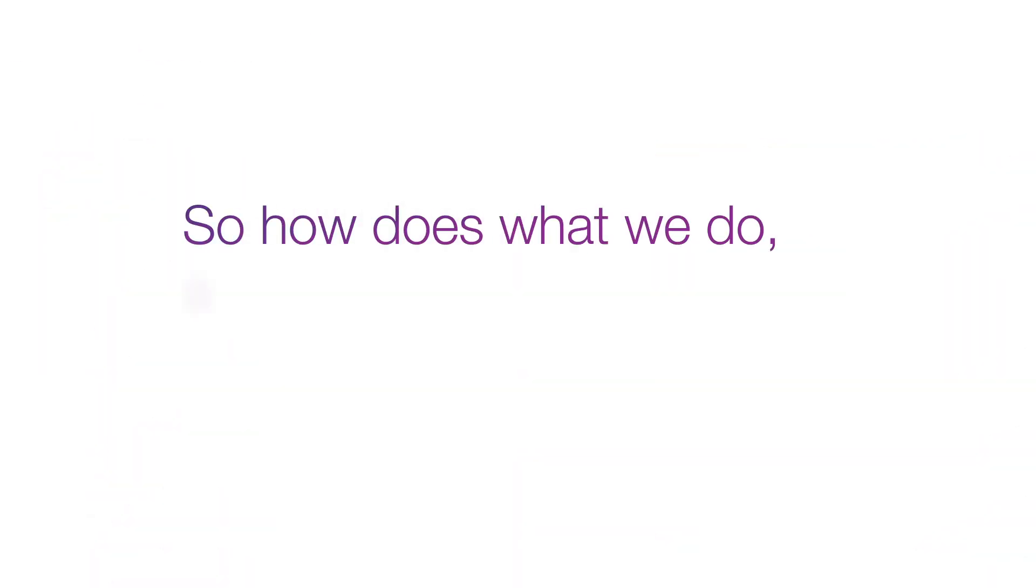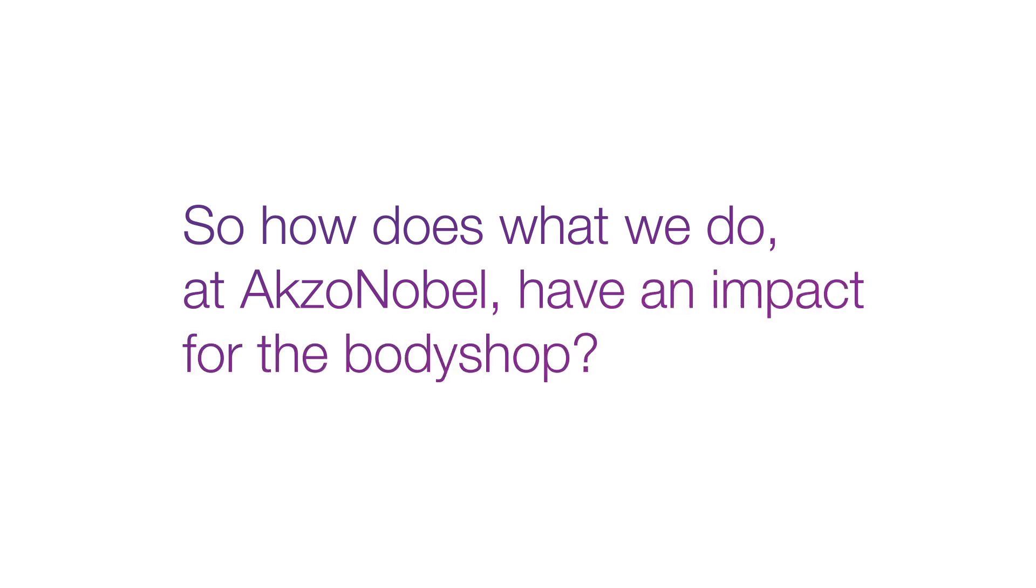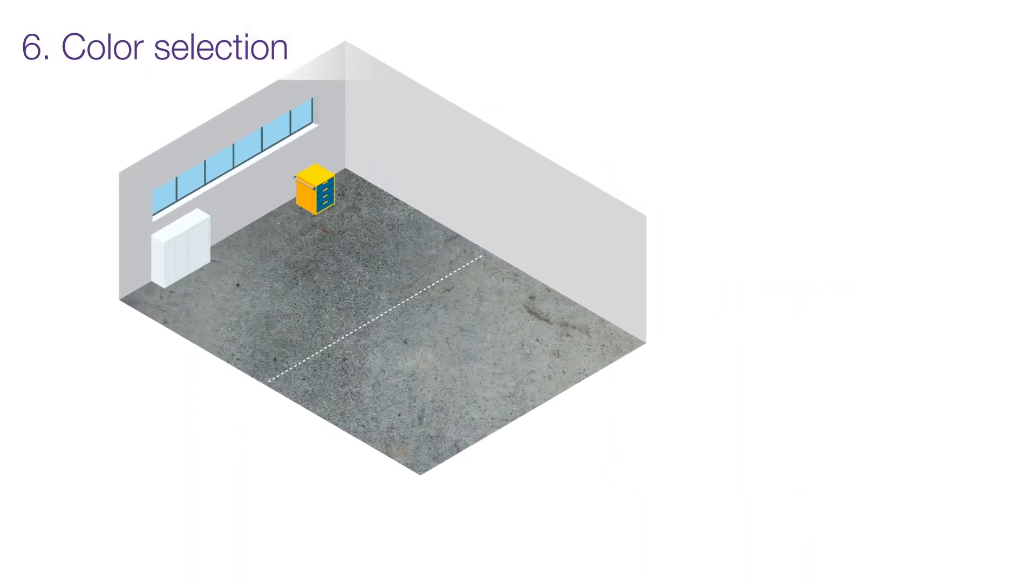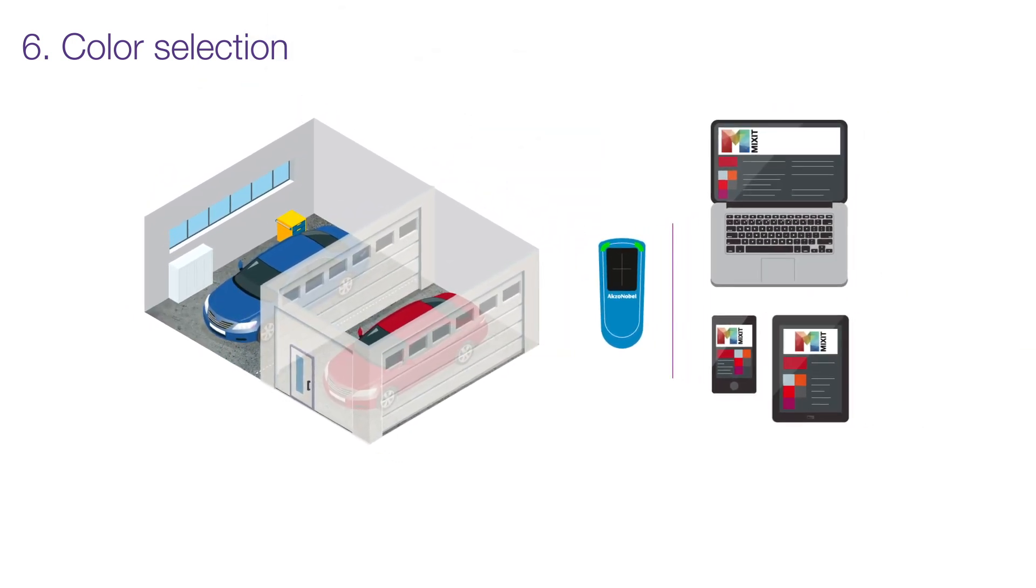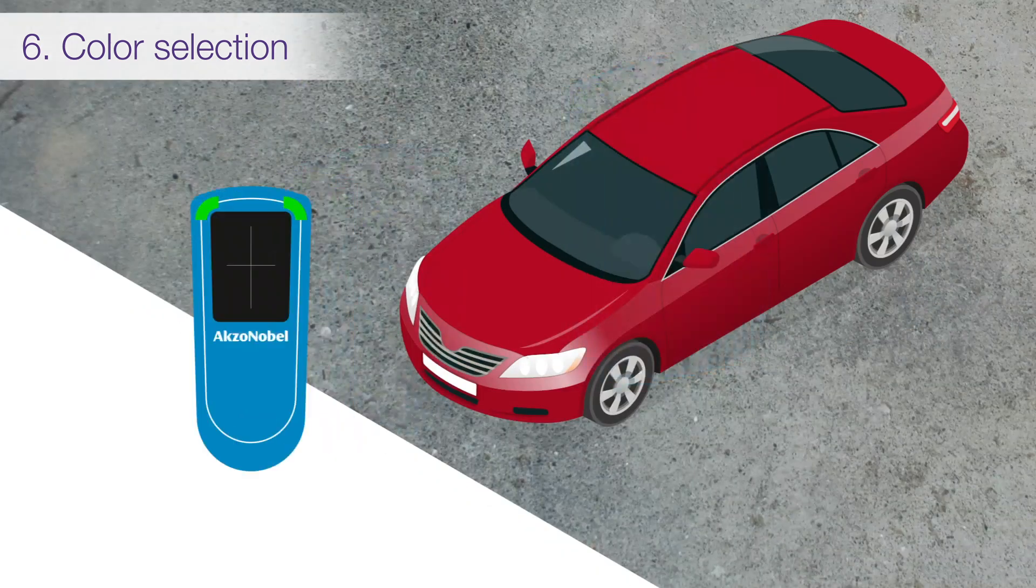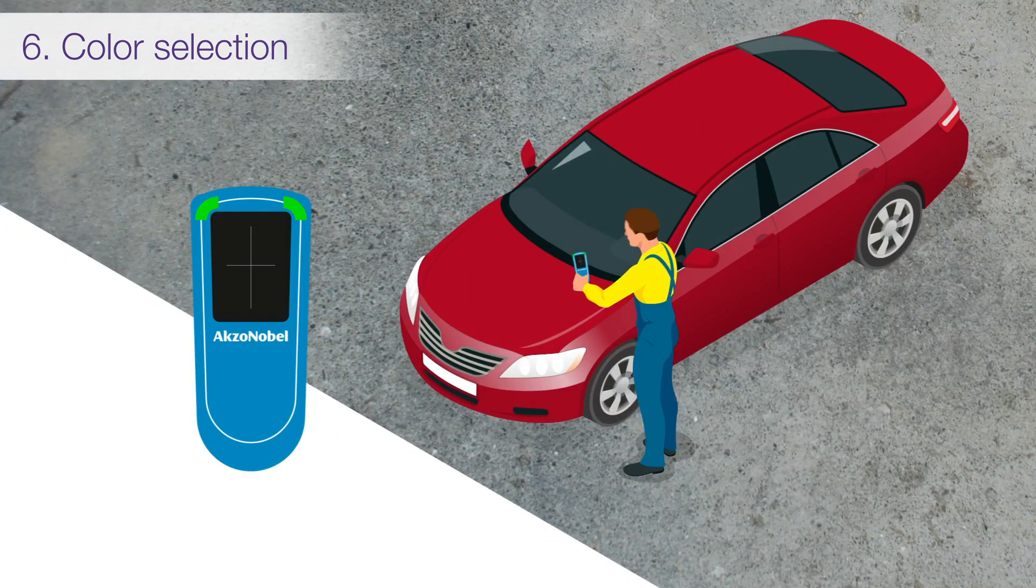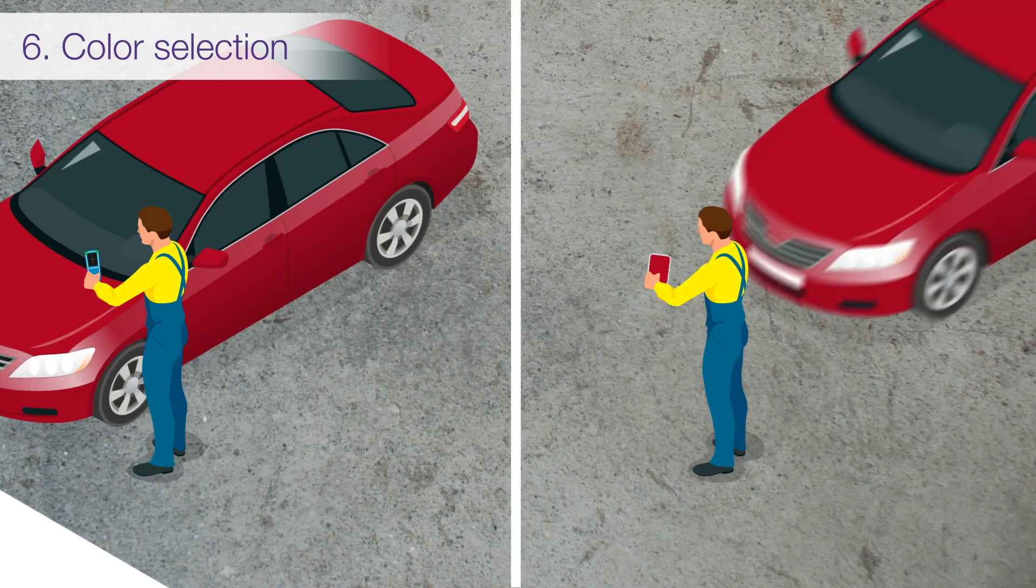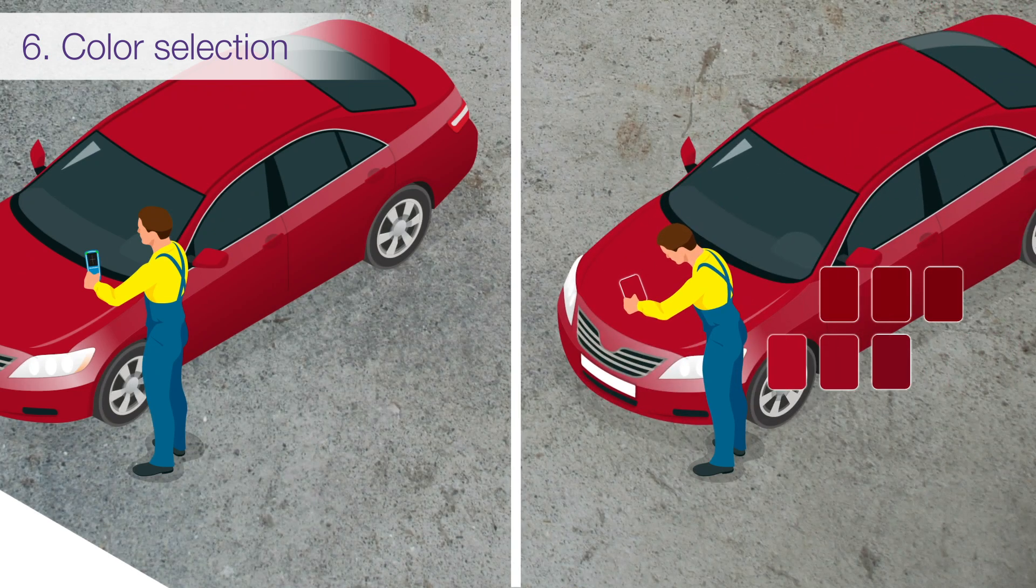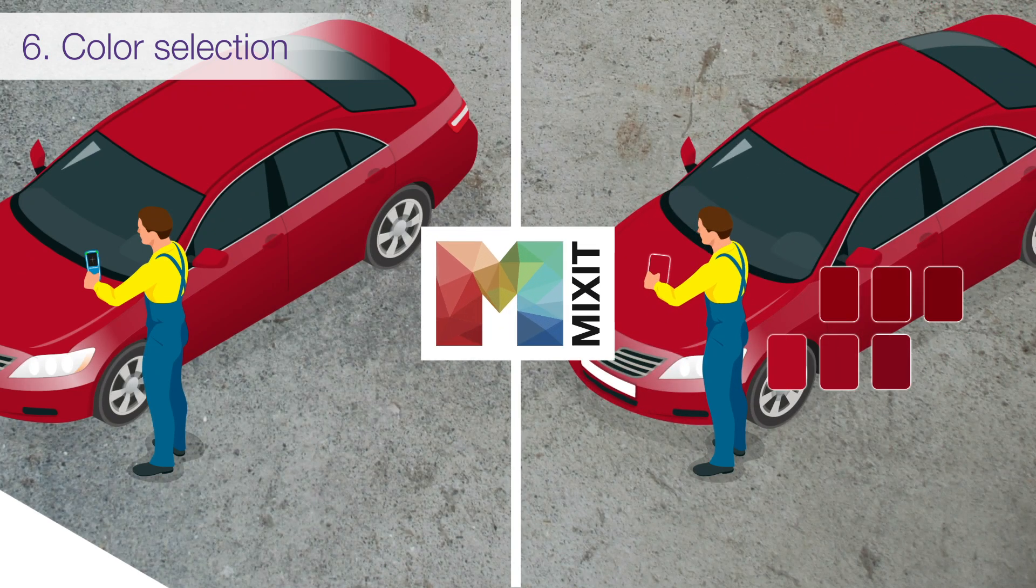So how does what we do at AXO Nobel have an impact for the body shop? We provide body shops with innovative tools such as Automatic and Mixit in order to select the right color. The Automatic Vision Spectrophotometer accurately measures the car color, which leads to an optimized formula for the perfect match. Customers using visual color documentation select the best matching chip and the Mixit software provides the formula.